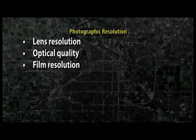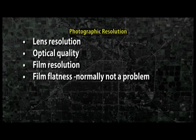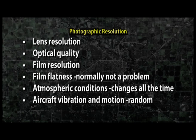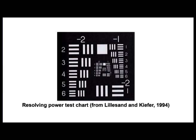Photographic resolution: spatial resolution of aerial photographs is largely dependent on the following factors — lens resolution, optical quality, film resolution, film flatness (which is normally not a problem), atmospheric conditions (which change all the time), and aircraft vibration and motion (which are random). Film resolution depends mainly on granularity. The standard definition of photographic resolution is the maximum number of line pairs per mm that can be distinguished on a film when taken from a resolution target, as shown in the figure. If the scale of the aerial photograph is known, we can convert the photographic resolution to a ground resolution.